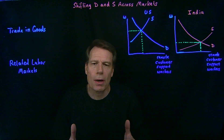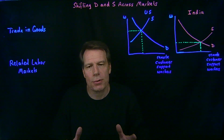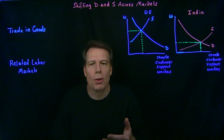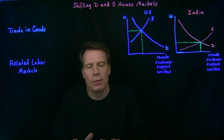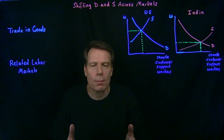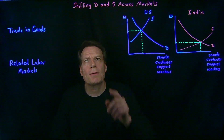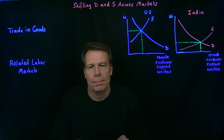In the last two modules, we talked about connections across markets and how those connections give rise to the law of one price, and how compensating differentials can interfere with the law of one price. And as we were doing that, we found ourselves shifting demand and supply across markets.